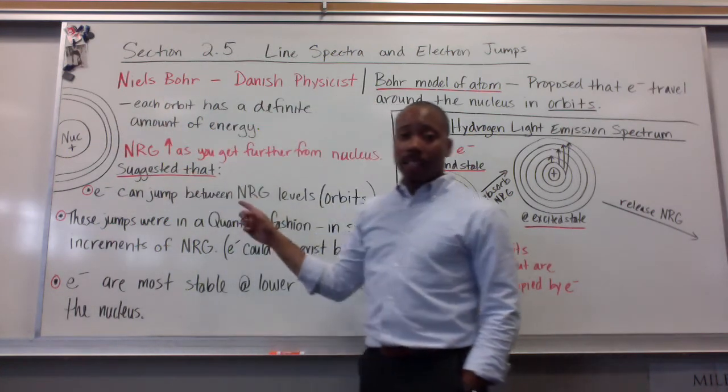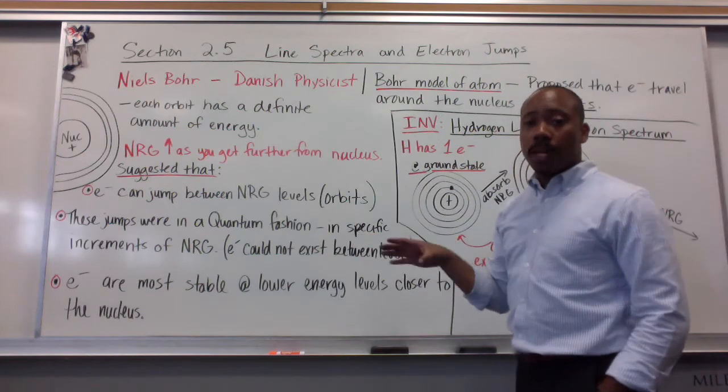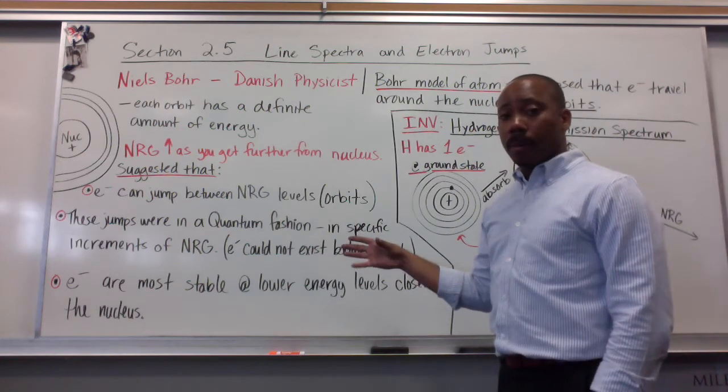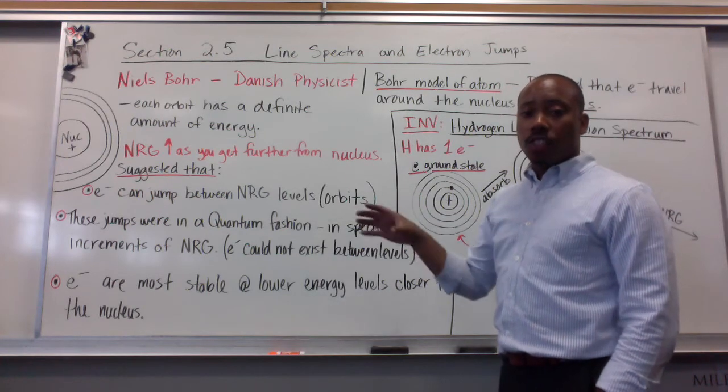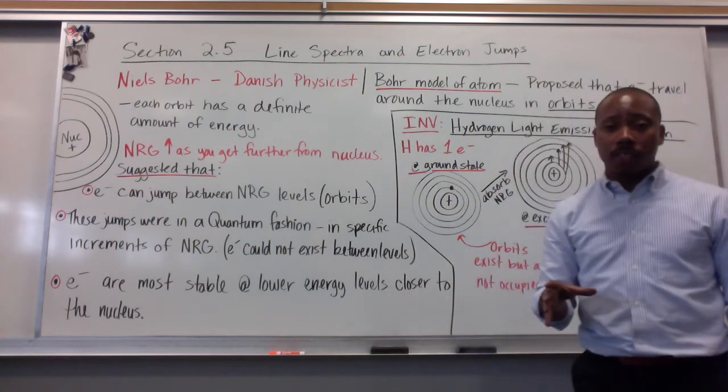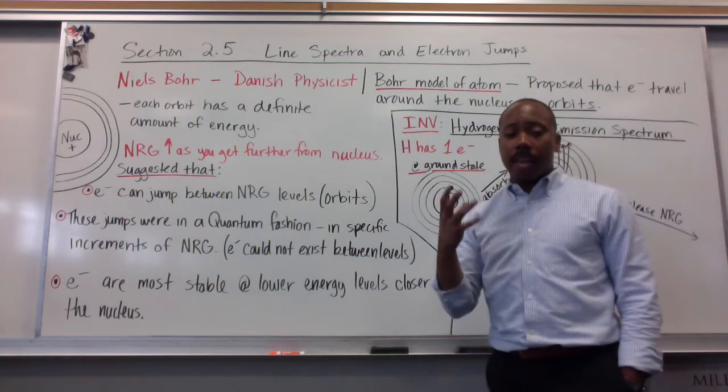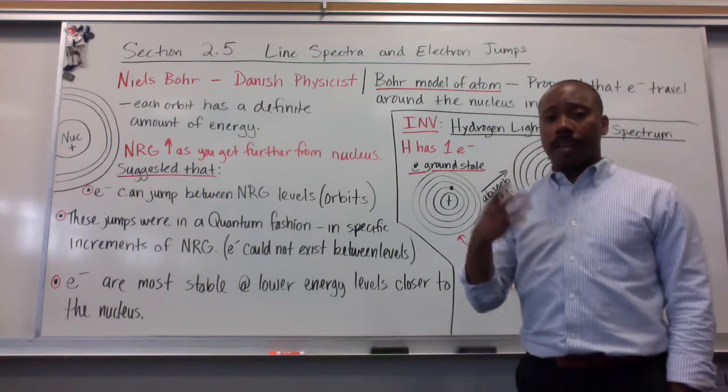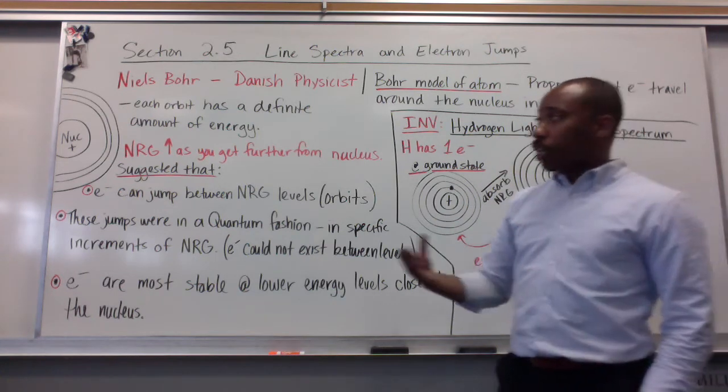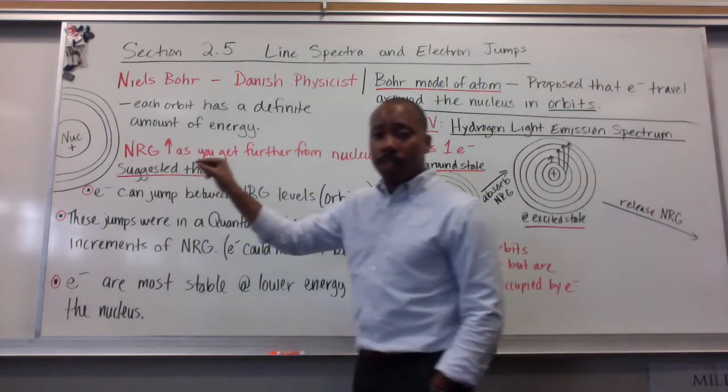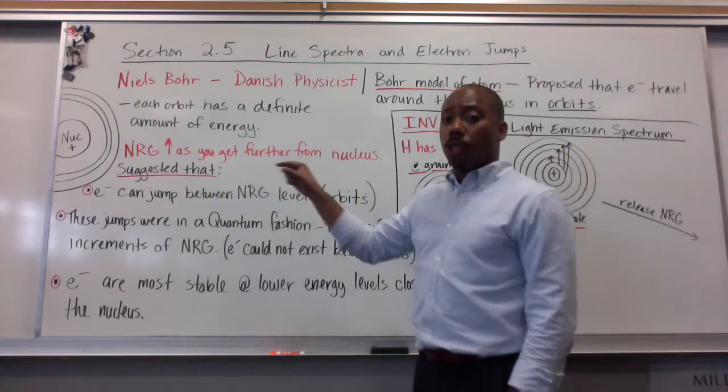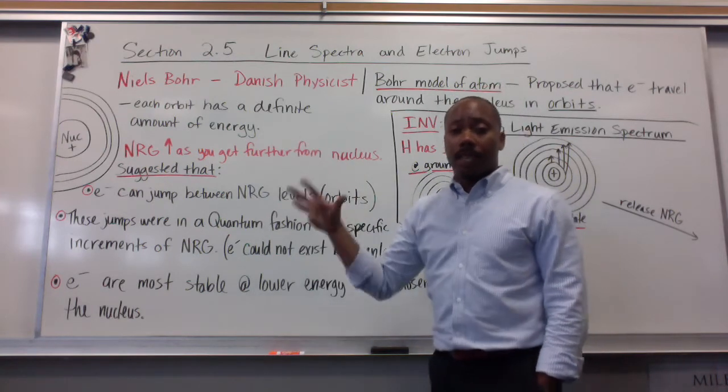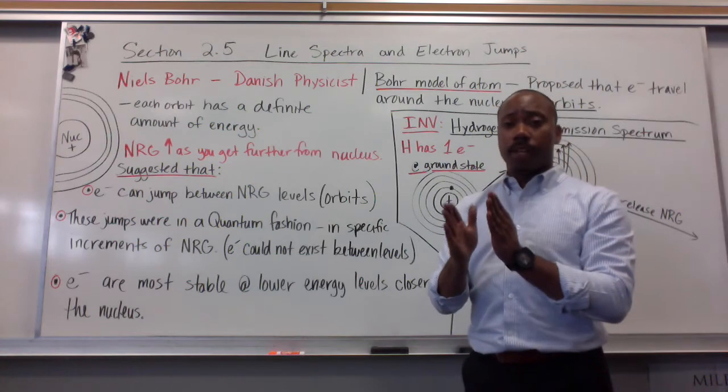He suggested that electrons can jump between energy levels or orbits, meaning they can go from energy level 1 to energy level 2, energy level 3, etc. These jumps were in a quantum fashion, meaning they were in specific increments of energy. So you couldn't go from energy level 1 to energy level 1.5. You had to go from energy level 1 to energy level 2, or 2 to 3, etc., because they were very specific increments of energy.